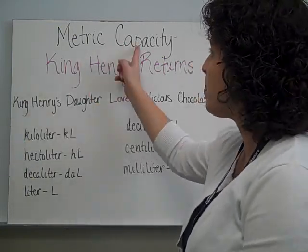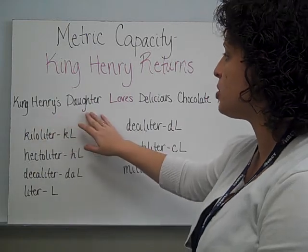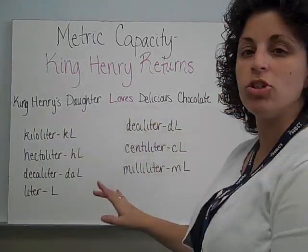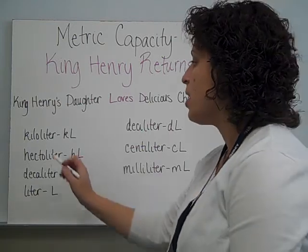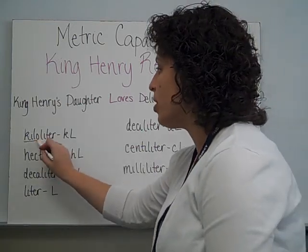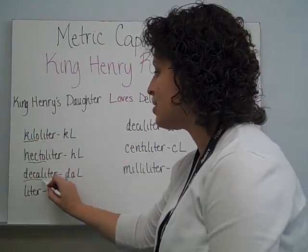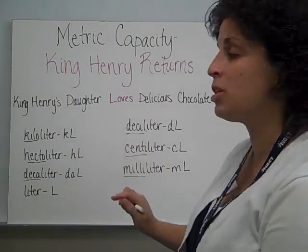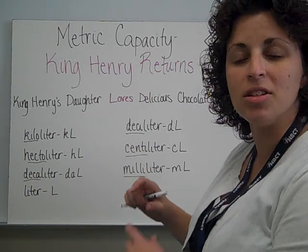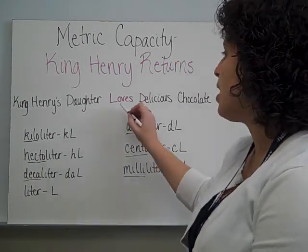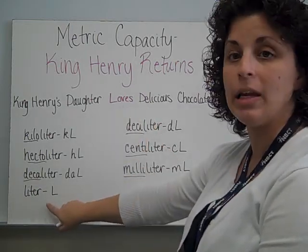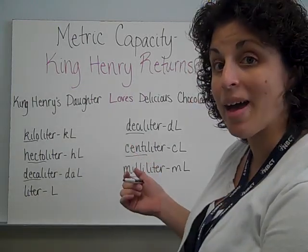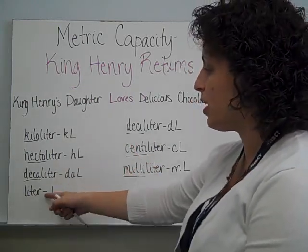The phrase for capacity is going to be King Henry's daughter loves delicious chocolate milk. Just like before in the metric system, these number prefixes have stayed the same, but the part that has changed is 'loves' — it's their building block, so to speak. Loves is for liter, and everything in the metric system that measures capacity is built from liters.